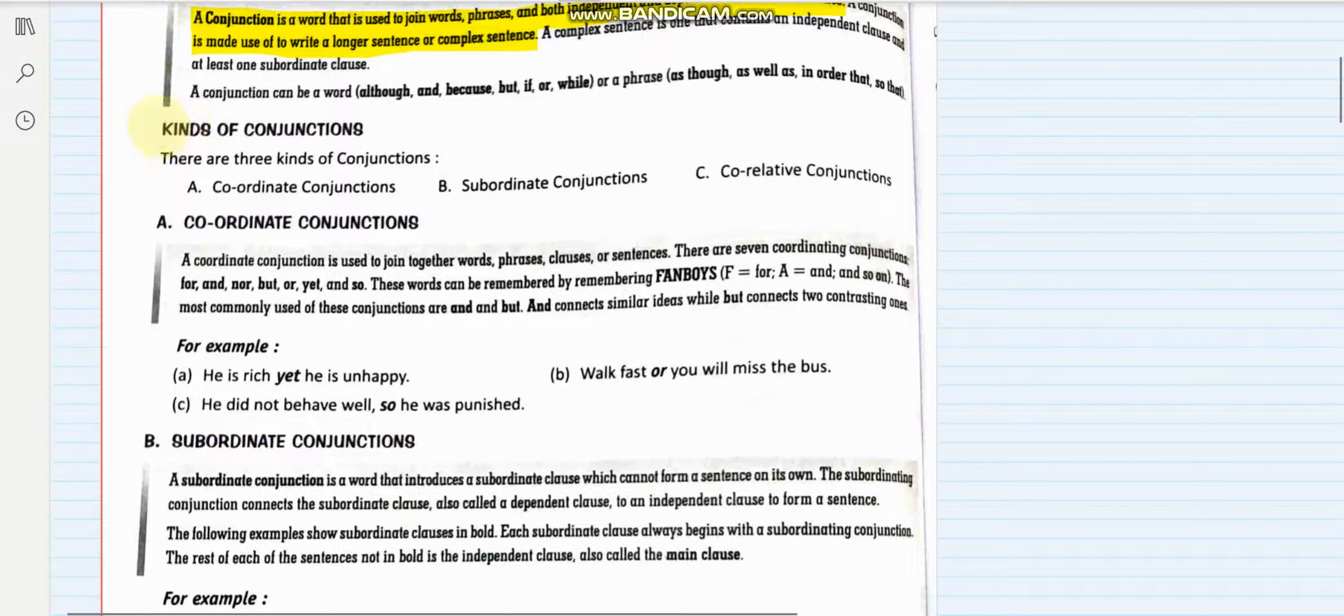Now if we talk about the kinds of conjunctions here, there are three kinds of conjunctions: coordinating conjunctions, subordinate, and correlative conjunctions.